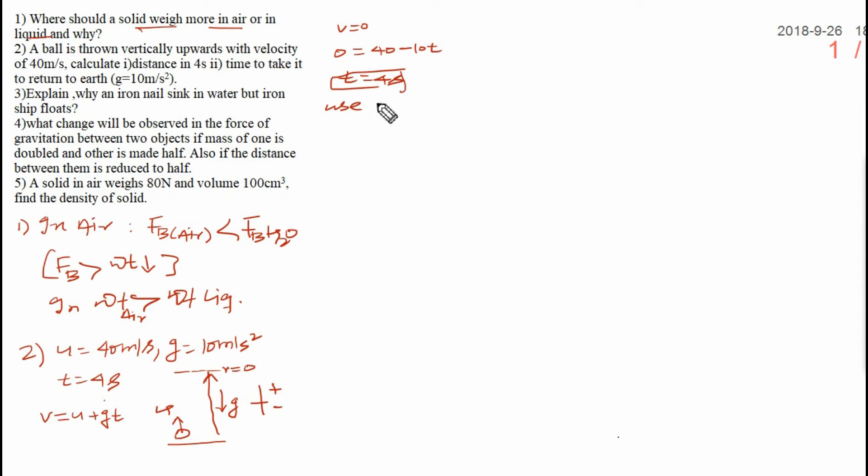Now, how much distance is traveled? You can use s is equal to ut plus half gt square. s is the distance. s is equal to u is given, that is 40. Time I have calculated, that is 4 seconds minus half. G is 10 and time is square of the 4. You will finally get 160, 40 into 4 is 160 minus 4 fours are 16, 16 by 2, 8 into 10, that is 80. And finally, that will be 80 meter.